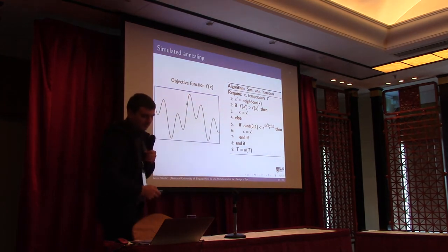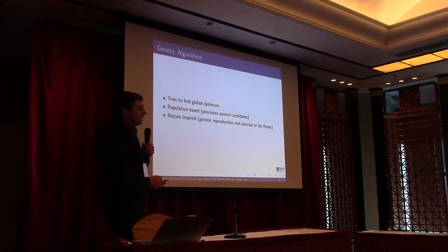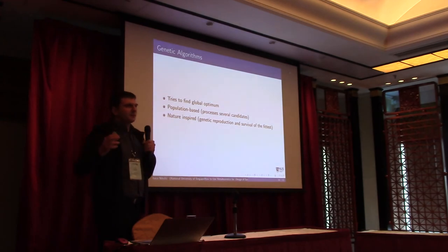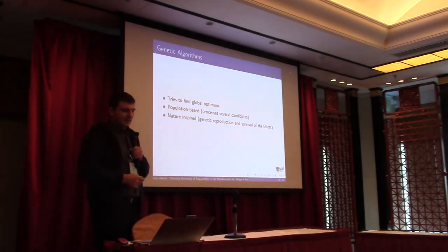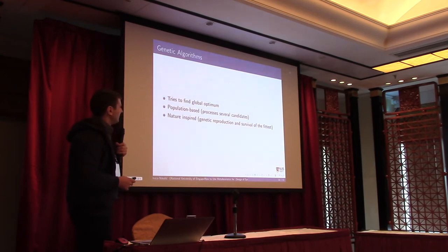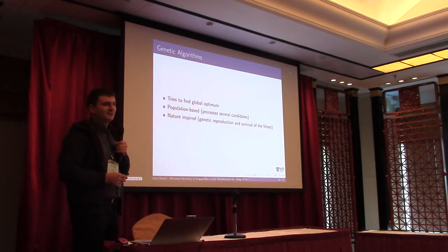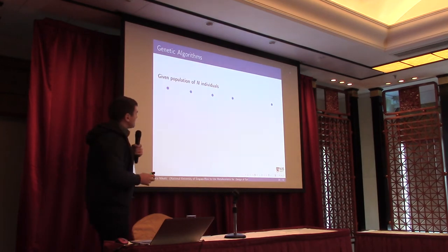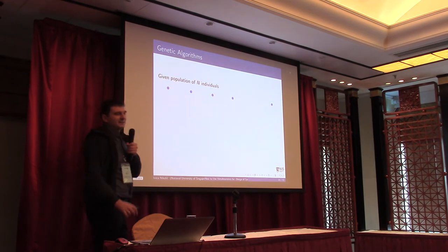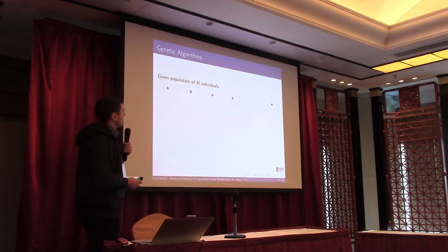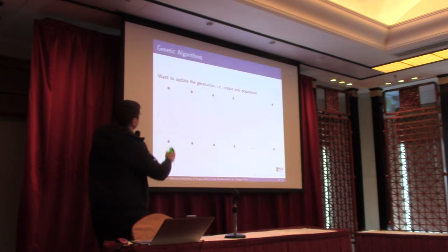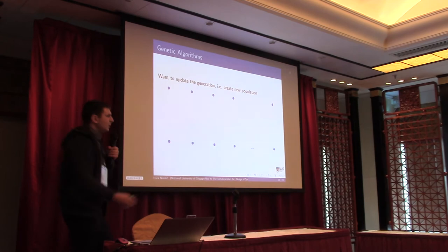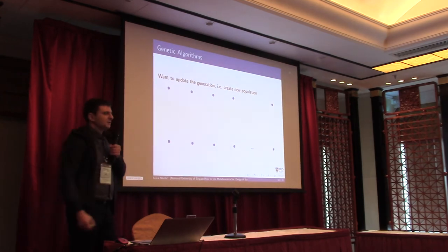Now let's move to genetic algorithms. Genetic algorithms also try to find the global optimum, and they are population-based — they work with a set of candidates. They are nature-inspired, based on genetic reproduction and survival of the fittest. You have a population of N individuals, basically a set of inputs to the objective function. From this generation you try to create a new generation of individuals.